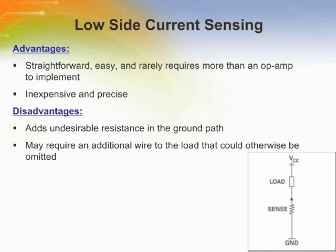Low side sensing is also inexpensive and precise. However, it has some disadvantages. This kind of circuit will add undesirable resistance in the ground path and may require an additional wire to the load. If your application can tolerate the extra disturbance in the ground current path, low side current sensing is almost always the best option.